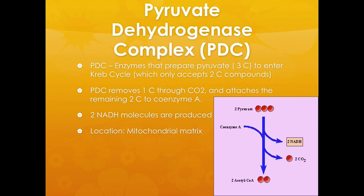The next thing we're going to discuss is pyruvate dehydrogenase complex, or PDC. PDC are enzymes that prepare the pyruvate, which is a 3-carbon compound, to enter the Krebs cycle. This is really important because the Krebs cycle only accepts 2-carbon compounds. So before the 3-carbon pyruvate can enter the Krebs cycle, it needs to become a 2-carbon compound. The PDC removes one carbon in the form of carbon dioxide and attaches the remaining two carbons to coenzyme A, which then gets passed on to the Krebs cycle.